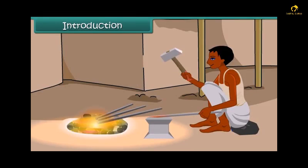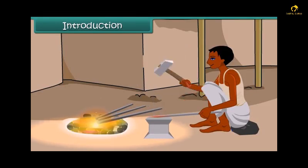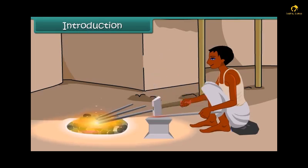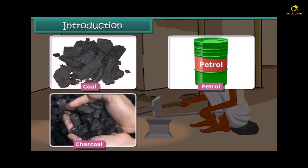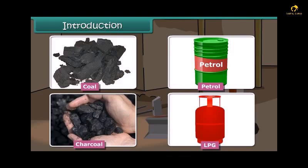The blacksmith burns coal to get hot iron which can be beaten to desired shape. A variety of fuels is used in daily life such as coal, petrol, charcoal, LPG, etc. Do you know which chemical process is taking place during the burning of these fuels? It is combustion.